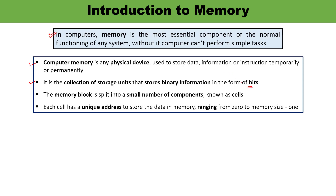The memory block is split into smaller components, and each component is known as a cell. Each cell of a memory has a unique address to store data into the memory. When talking about the address of a particular cell, the address range goes from 0 to a certain value minus 1.